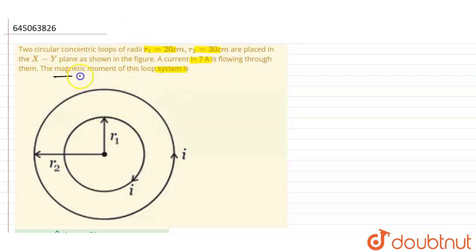We have to find the magnetic moment. Now we know that the magnetic moment is basically written as the magnetic moment equals i into A, where A is the area vector.